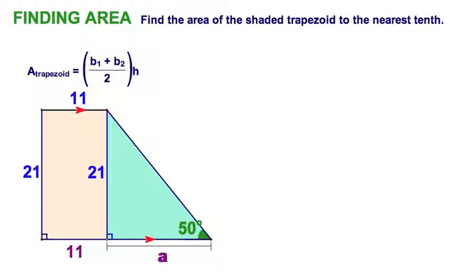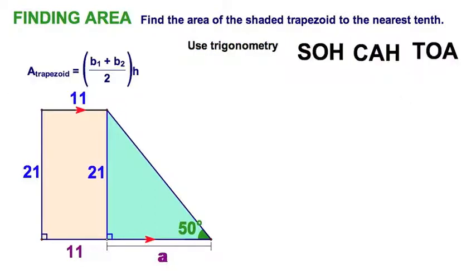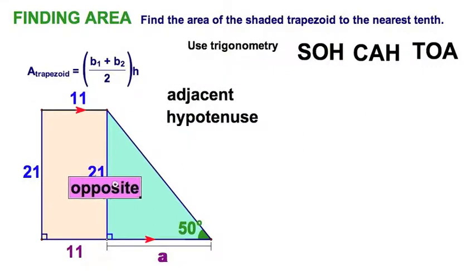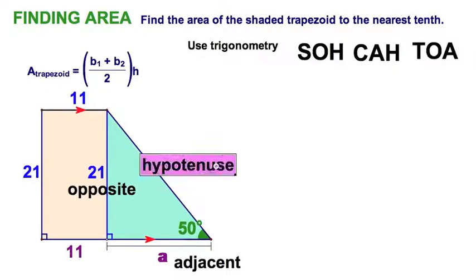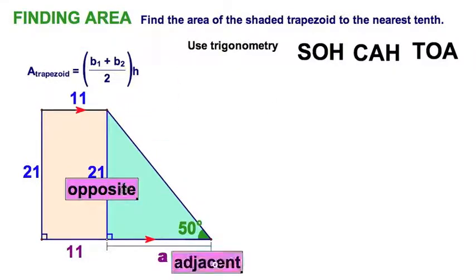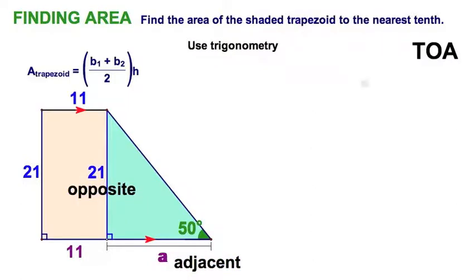So let's get to the trig. I remember my SOHCAHTOA with respect to this 50 degree angle. I'm looking at the 21 is clearly the opposite, the adjacent, well that's the A, convenient letter there, hypotenuse is over here. Well don't need that hypotenuse, I need a ratio with opposite and adjacent, and that's clearly going to be tangent, the TOA in SOHCAHTOA.